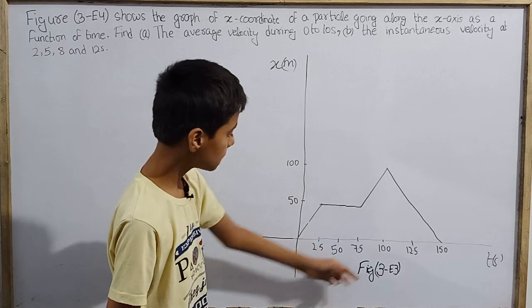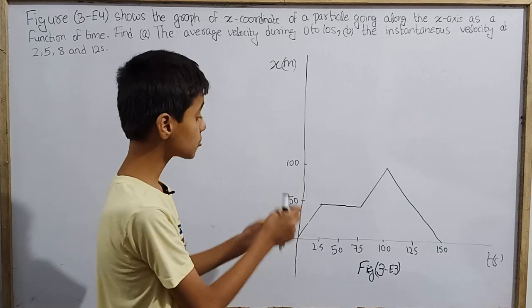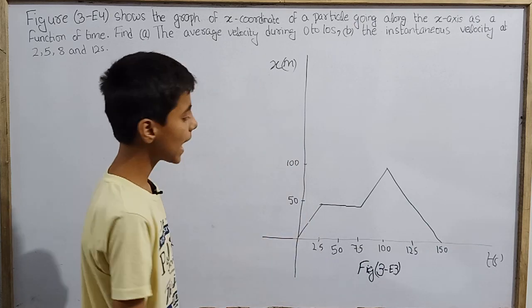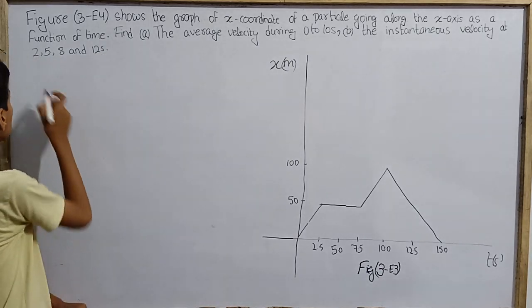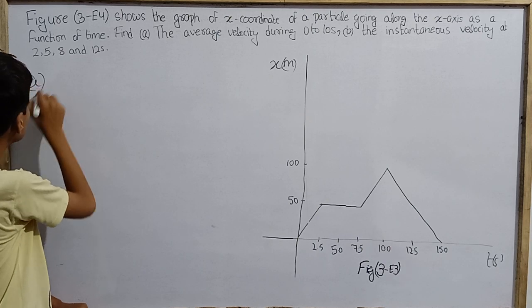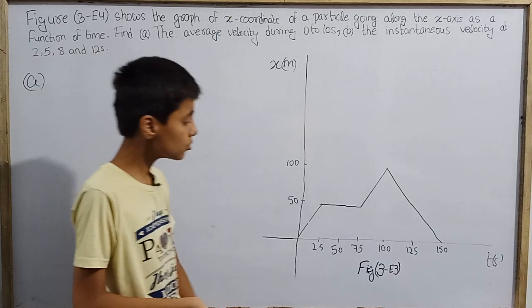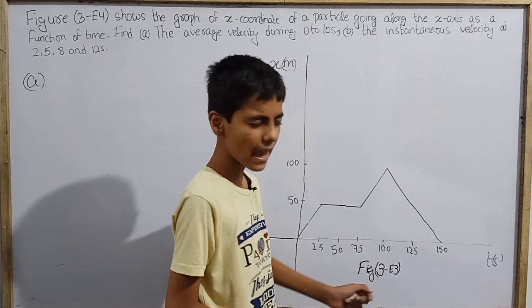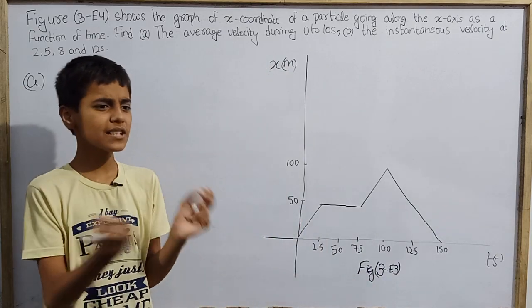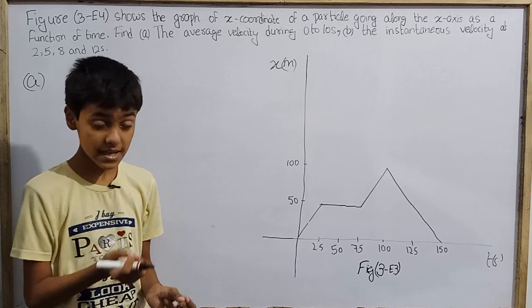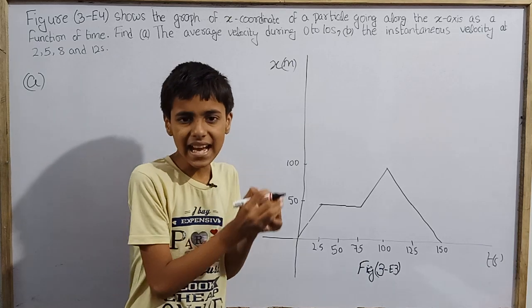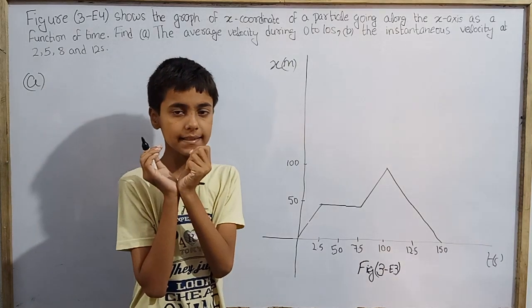Here we have a graph given, we have been given a figure which is named as figure 3E3. Now what we have to do is find the average velocity first. We have to show average velocity 0 to 10 seconds. Now, average velocity tells us how fast or slow the particle moves, but we have to show the entire duration.